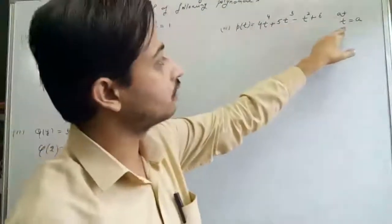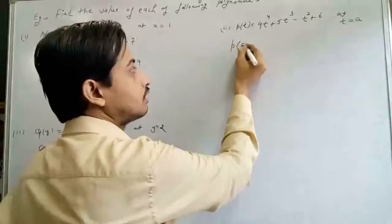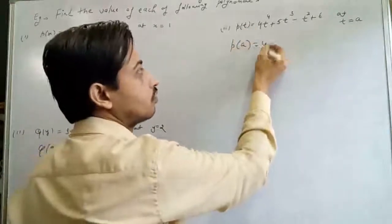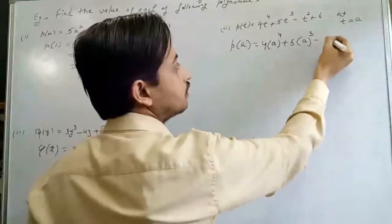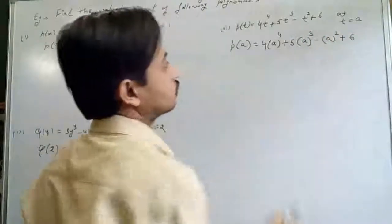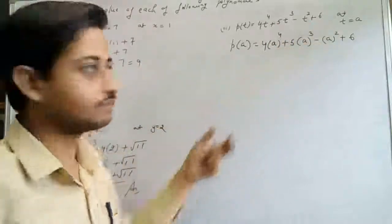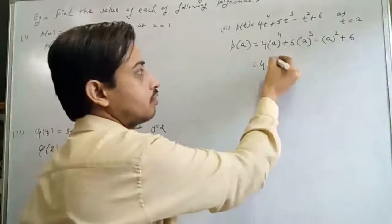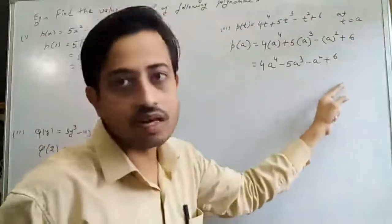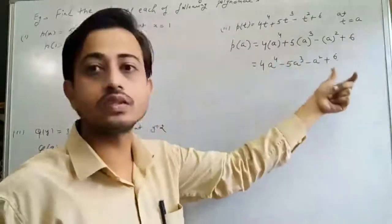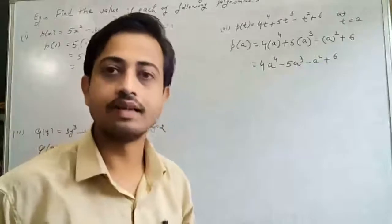For the third example, we have to calculate at t=a, so we put t=a everywhere we find t. This gives 4 into a⁴ minus 5 into a³ plus 6 — wait, we get 4a⁴ minus 5a² minus a² plus 6. All these terms are different because the powers of a are all different (4, 3, 2, and constant), so they cannot be added. This is our final answer.